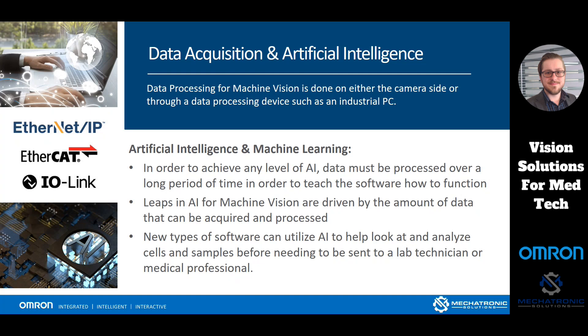One example of this in life sciences is new types of software utilizing AI to help analyze cells and samples before they have to go to a lab technician or medical professional. If we can teach software to identify cancerous cells, this can help the field utilize human resources more for what we're good at. We can use AI to make the burden on humans less.